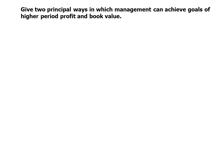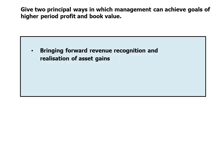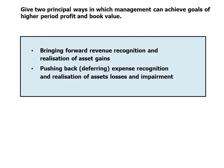Give two principal ways in which management can achieve goals of higher period profit and book value. First, on the revenue side: bringing forward revenue recognition and bringing forward realization of asset gains both increase profit and book value. Second, on the expense side: pushing back or deferring expense recognition to later periods, and deferring recognition of asset losses or impairments.